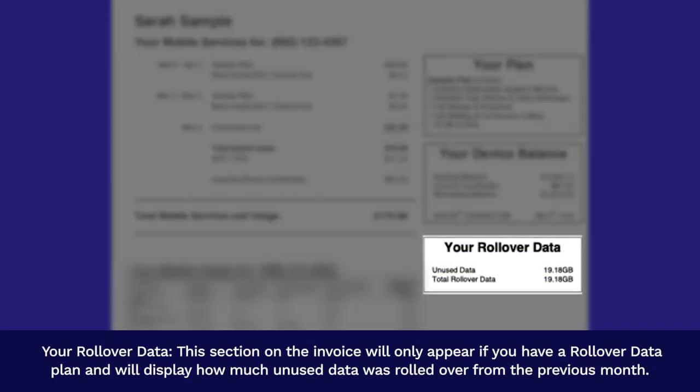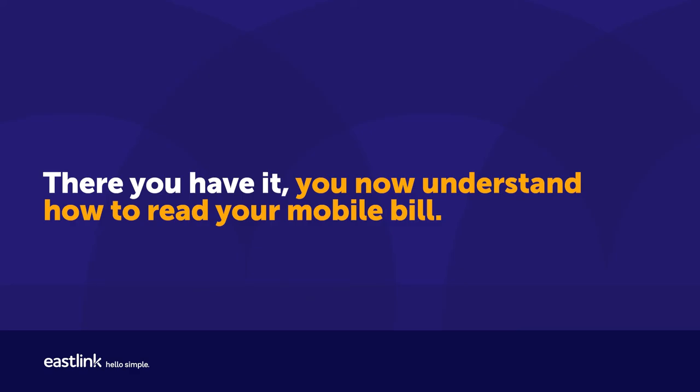Your rollover data: this section on the invoice will only appear if you have a rollover data plan, and will display how much unused data was rolled over from the previous month. There you have it — you now understand how to read your mobile bill.